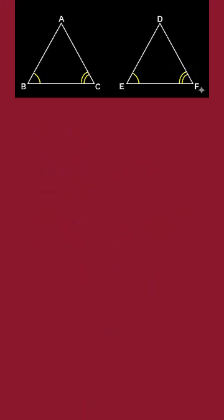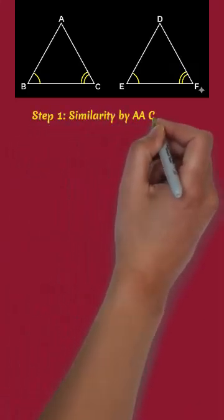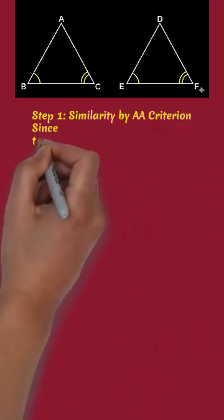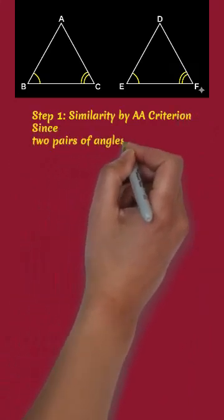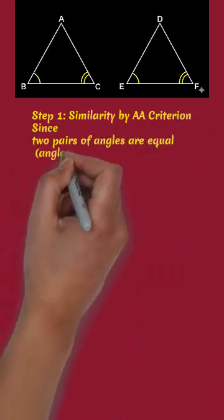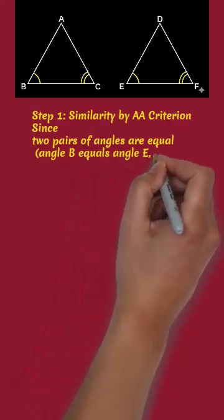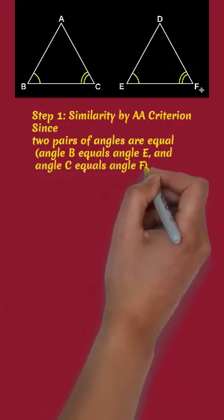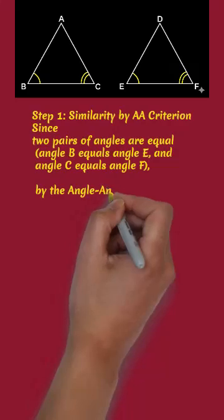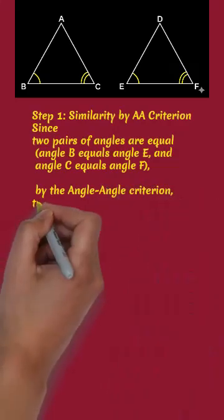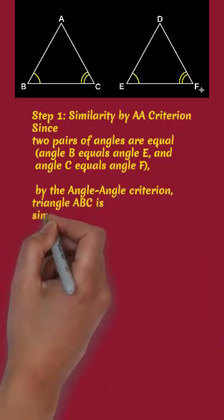Step 1: Similarity by AA criterion. Since two pairs of angles are equal, angle B equals angle E and angle C equals angle D, by the AA criterion, triangle ABC is similar to triangle DEF.